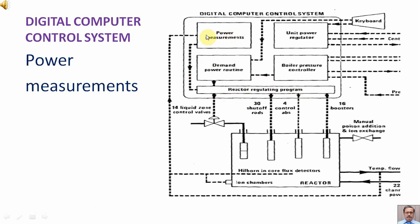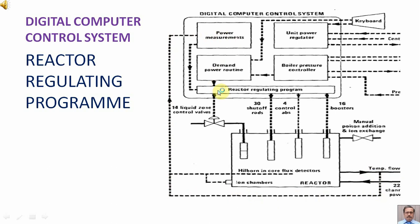The demand power routine is giving commands to the reactor regulating program. The power measurement unit is receiving signals from ion chambers, in-core flux detectors, and temperature and flow signals from the coolant reactor. The output of the reactor regulating program goes to the liquid zone control valves, the shutoff rods, the control absorbers, and the boosters.